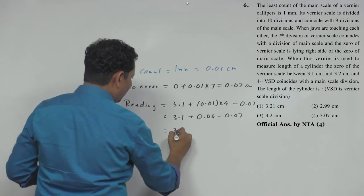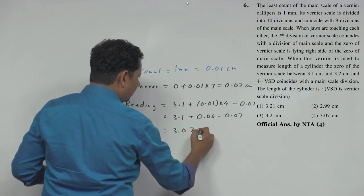This will be equal to 3.1 plus 0.04 minus 0.07. This will be equal to 3.07 cm.